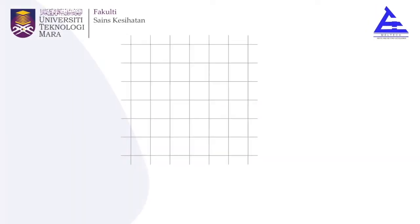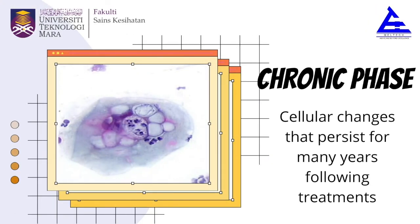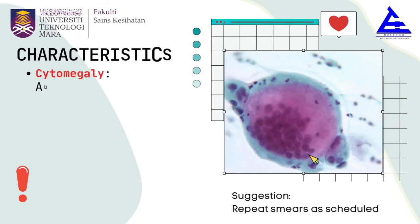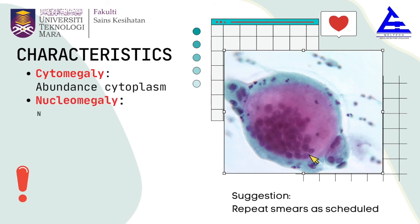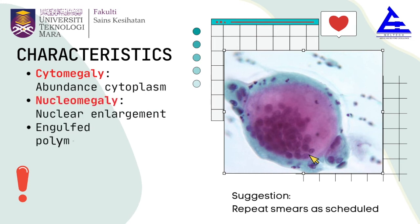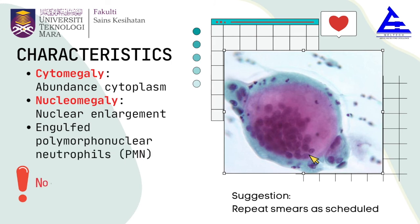For the chronic phase, where cellular changes persist for many years following treatment, characteristics include cytomegaly (abundant cytoplasm), nucleomegaly (nuclear enlargement), and engulfed polymorphonuclear neutrophils. Please remember that the NC ratio remains normal. Following this diagnosis, repeat smear as scheduled is suggested.